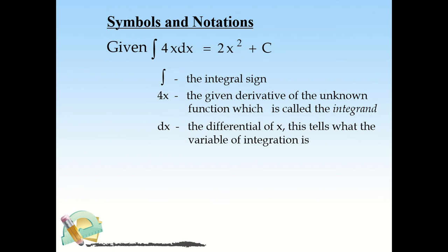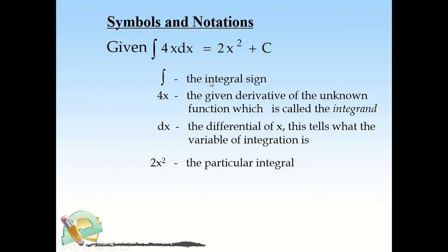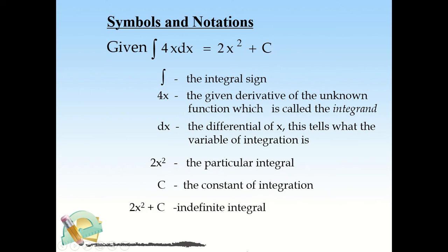The dx is the differential of x — this tells us what the variable of integration is. The 2x² here is called the particular integral, and C is the constant of integration. C is an arbitrary constant — it can be any number, positive or negative. The expression 2x² + C is what we call the indefinite integral.